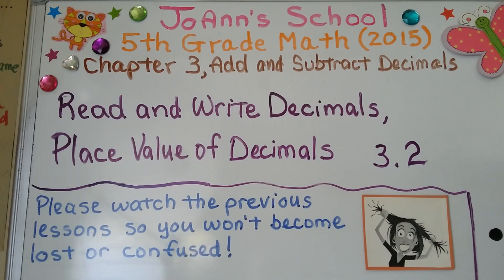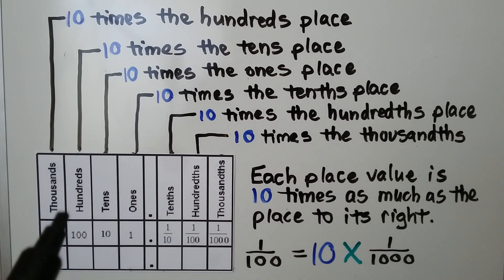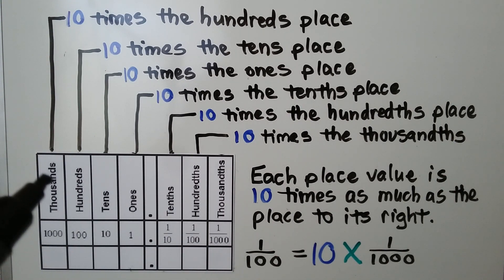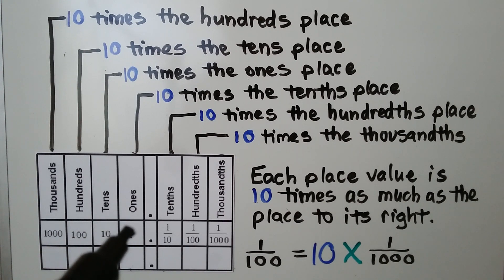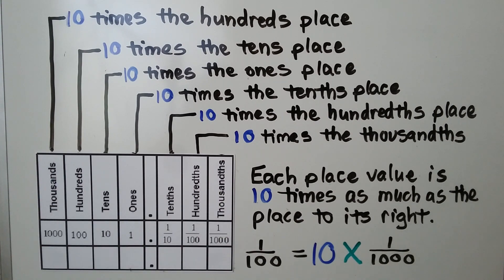Lesson 3.2: Read and Write Decimals. We can read, write, and represent decimals through thousandths by using a place value chart to help us see the value of each digit. Each place value is ten times as much as the place to its right. The thousandths place is ten times the hundredths place, the hundredths place is ten times the tenths place, the tenths place is ten times the ones place, and so on.